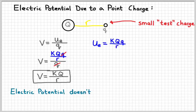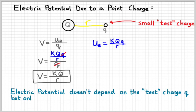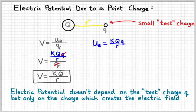The electric potential does not depend on that actual test charge, little q, but it only depends on the charge which created the electric field. So, it only depends on the big charge, Q.